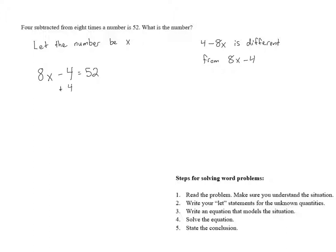We're going to start by adding 4 to both sides. The left-hand side just becomes 8x because negative 4 and positive 4 cancel. The right-hand side gives us 56 because 52 plus 4 is 56.